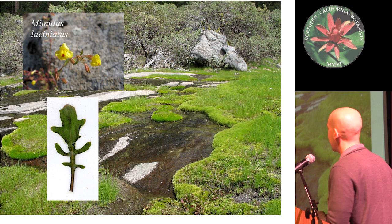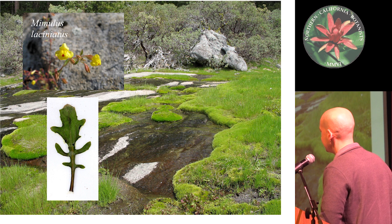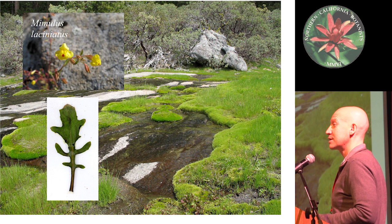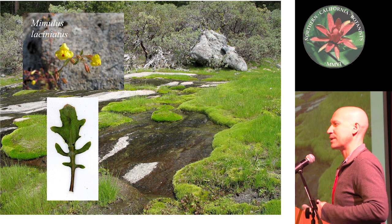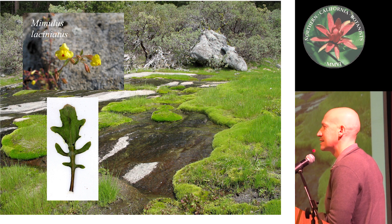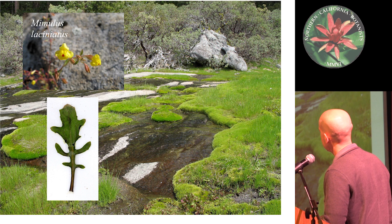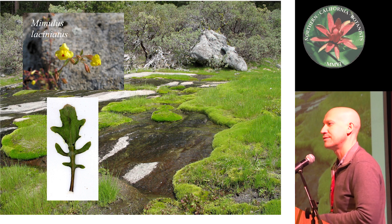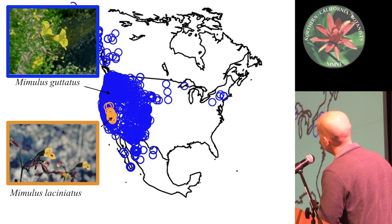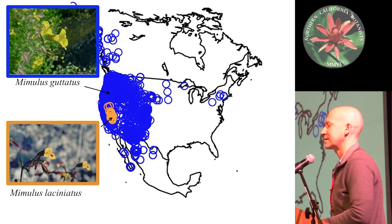The species I chose to work on is Mimulus liciniatus, cutleaf monkey flower, known for having this dissected leaf margin. I chose it because I thought it was interesting, I had an understanding of its species range, and I could go to the limits of its species range without traveling too far. It grows on the west slope of the Sierra Nevada, specialized to slow-flowing seeps — often granite seeps, though there are a few different rock types. It's an annual that develops rapidly, and it's highly selfing. It's a close relative to Mimulus catatus and actually interfertile with a lot of populations. In blue we have Mimulus catatus occupying a wide geographic range, and in yellow Mimulus liciniatus, restricted to the west slope of the Sierra Nevada.